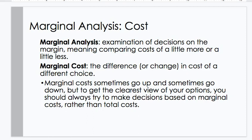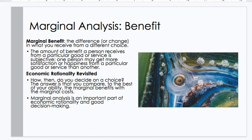Marginal analysis is the examination of decisions on the margin — comparing costs of a little more or a little less. Marginal cost is the difference or change in cost of a different choice. Marginal costs sometimes go up and sometimes go down, but you should always try to make decisions based on marginal costs rather than total costs. Marginal benefit is the difference or change in what you receive from a different choice. The amount of benefit a person receives from a particular good or service is subjective — one person may get more satisfaction than another. To decide on a choice, you compare the marginal benefits with the marginal costs. Marginal analysis is an important part of economic rationality and good decision-making.